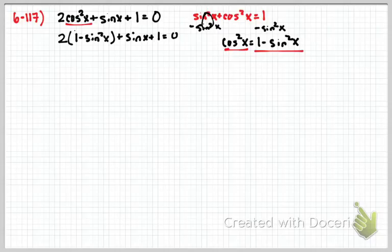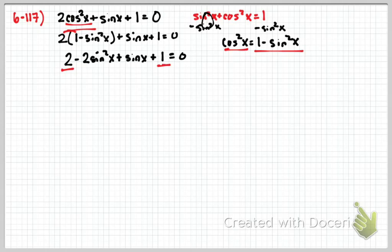All right. What's the next move? Distribute the 2. Boy, question. Oh, yeah. Distribute the 2. Go ahead and distribute the 2. 2 minus 2 sine squared x. Okay. I'm here. What are my like terms? What can I combine? 2 and 1. I'm going to kind of work through this with you. This is just basic algebra. Combining like terms. Sine of x plus 3 equals 0.